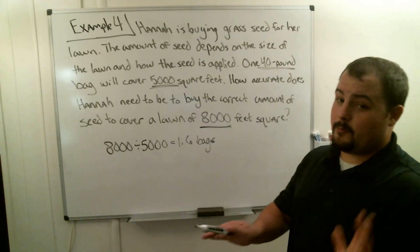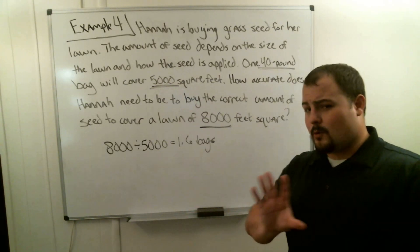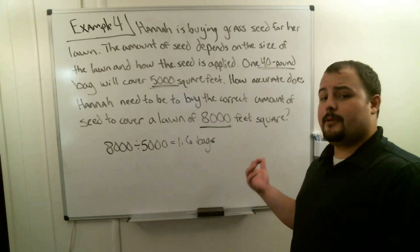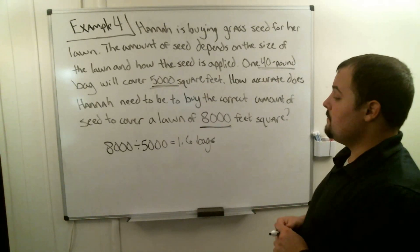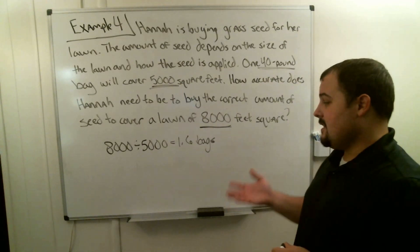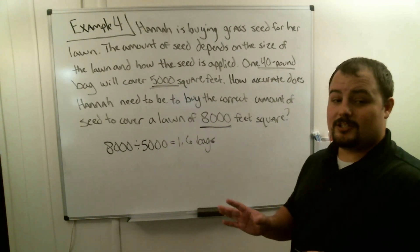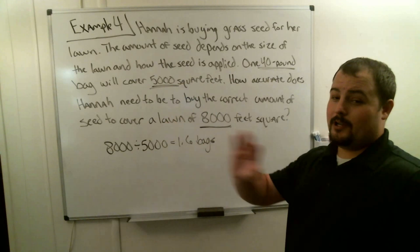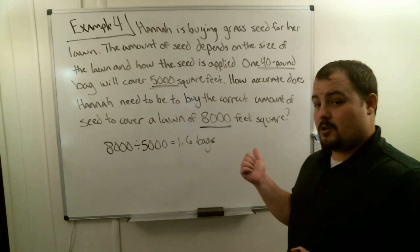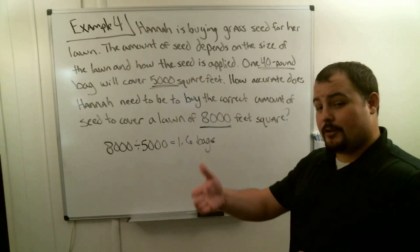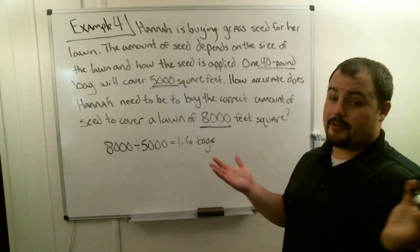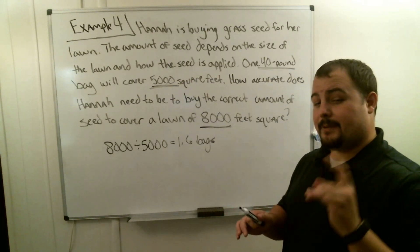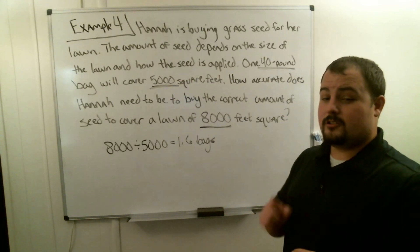Can you go to the store and buy 0.6 of a bag? No. Think about how many bags she should buy to completely cover 8,000 square feet and be safe. Hannah actually needs two bags — two bags would cover everything, and if she needs a little bit extra, she has it. You can't buy a fraction of a bag. Make sure you understand that you need to round up when you need complete coverage of something. Paint is another situation where you typically round up.